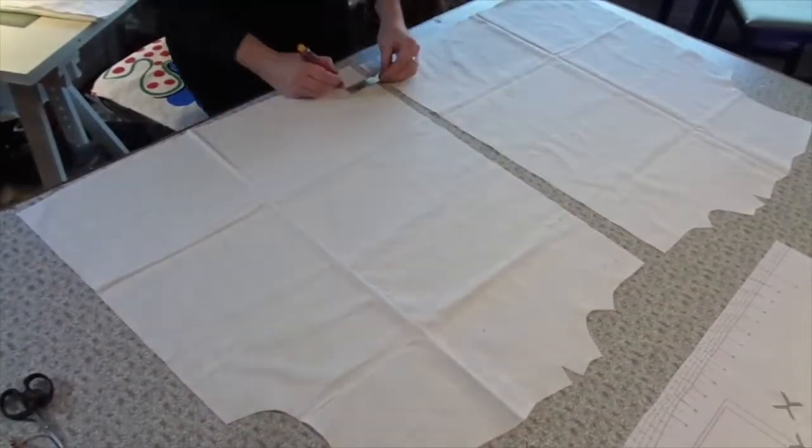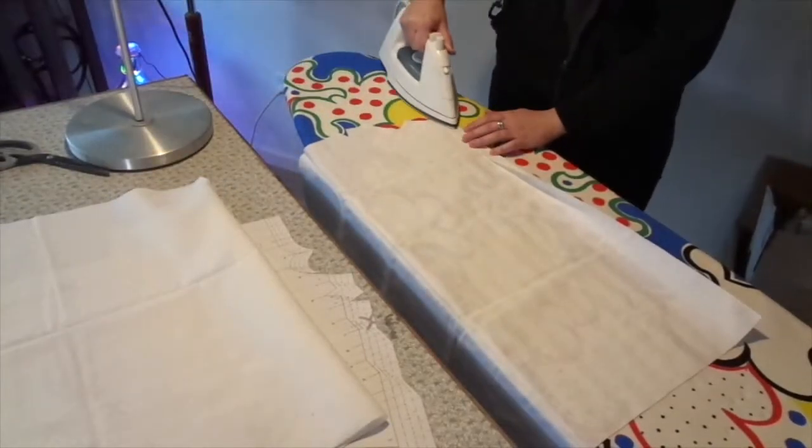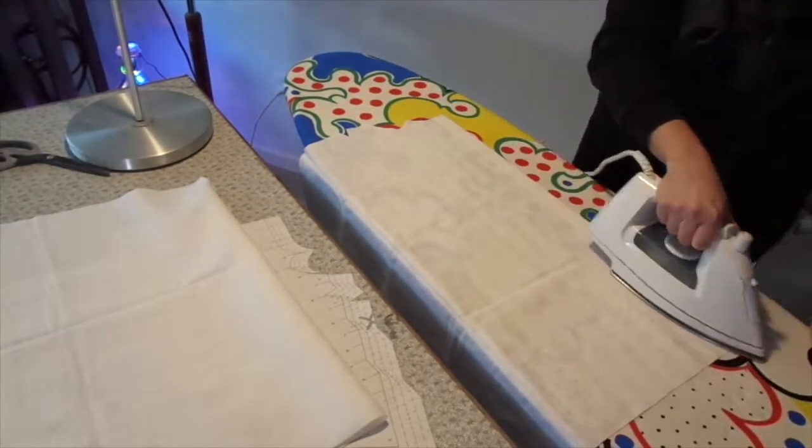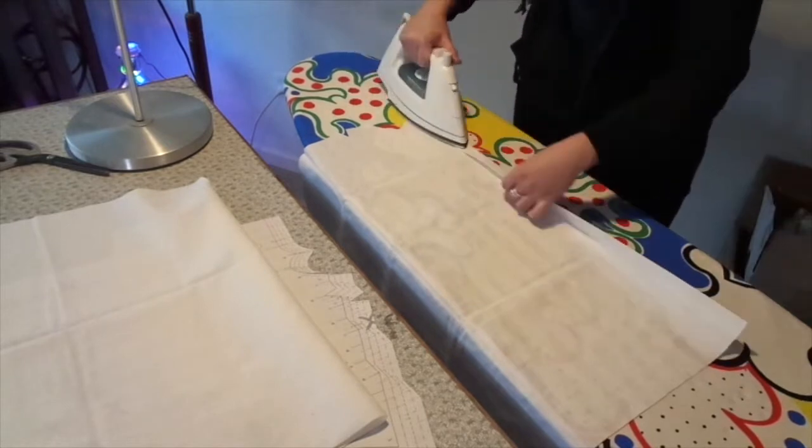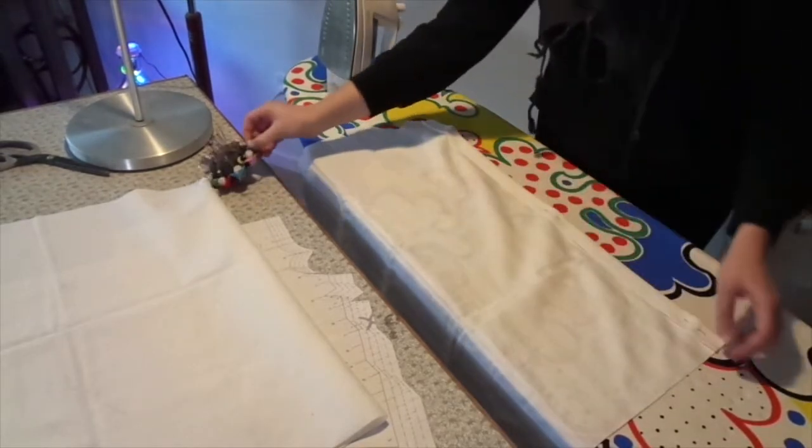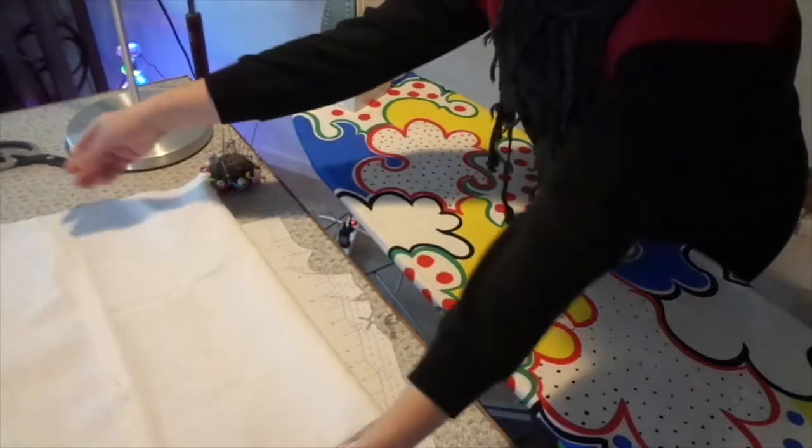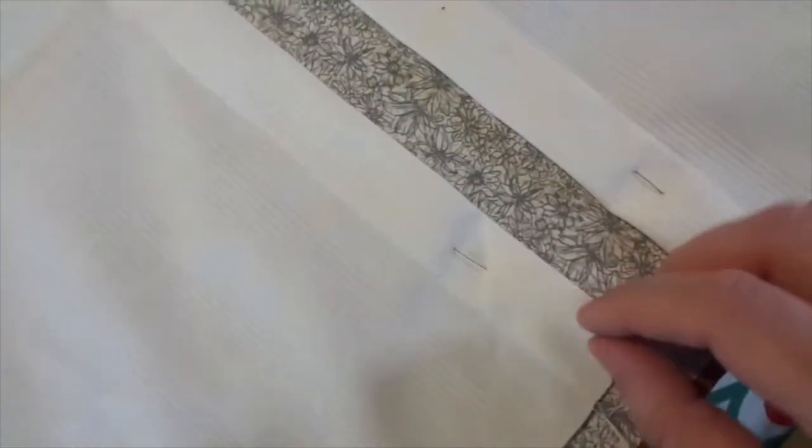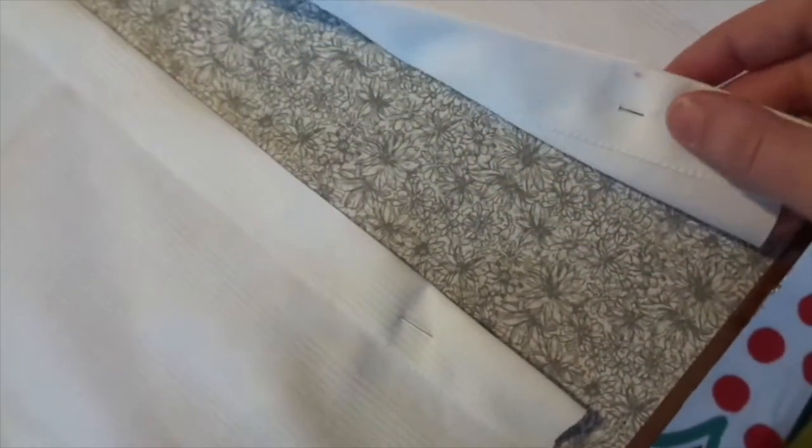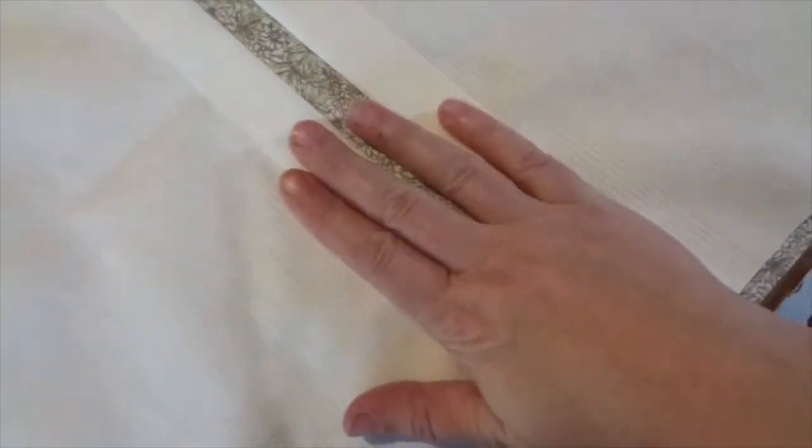Now I'm going to mark off the center front. I'm going to iron that, fold that over, iron it and then fold it over again. Then ironing it and putting it in some pins so it won't go anywhere. I'm doing this on both front pieces as you can see here. This is where the buttons are going to be and the buttonholes.